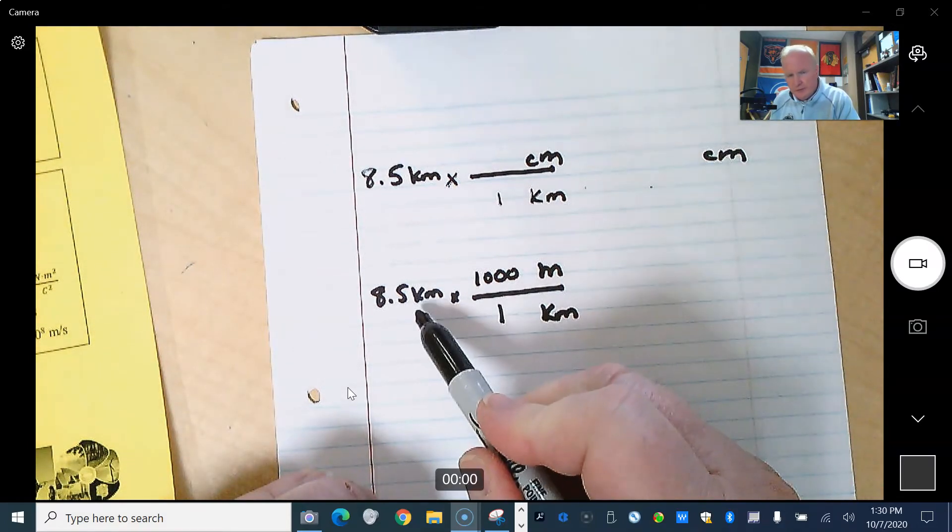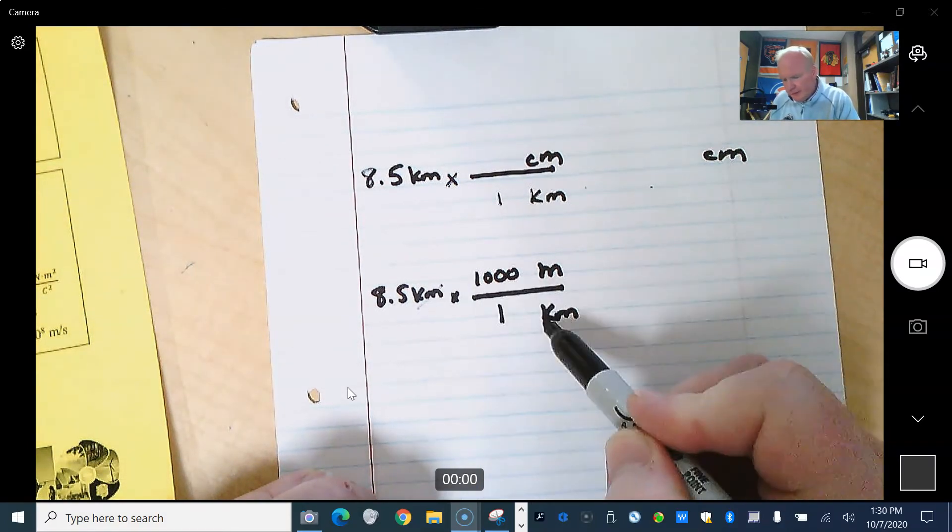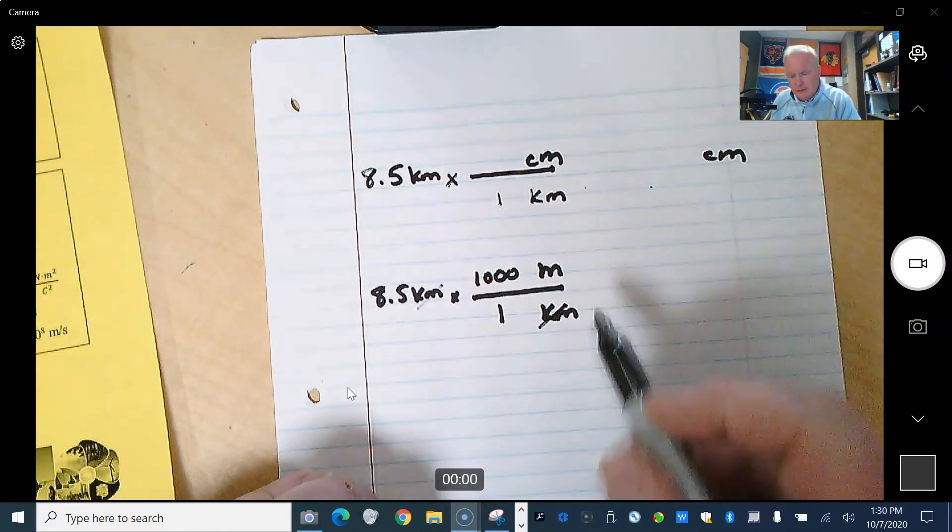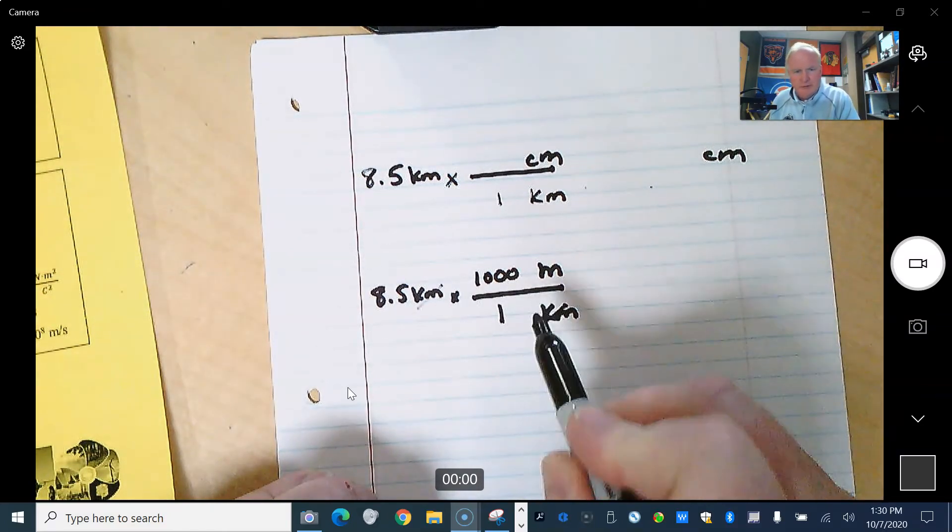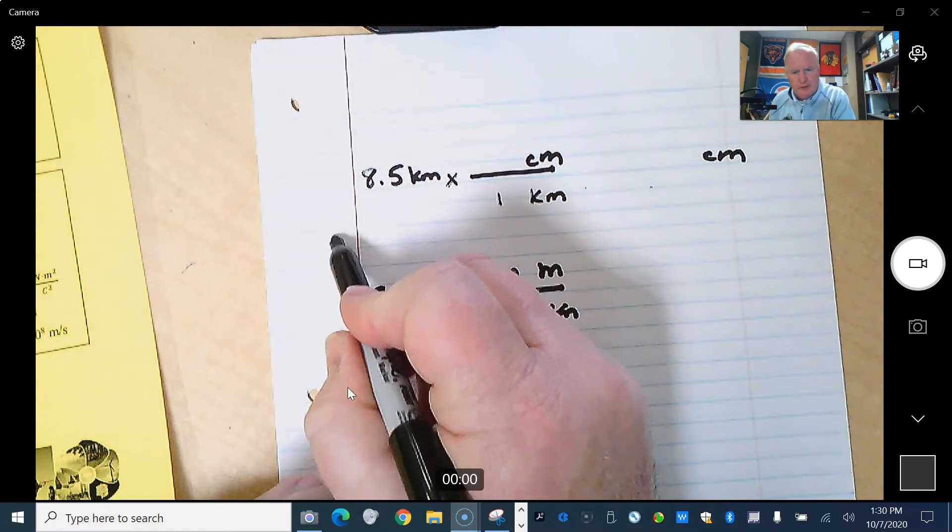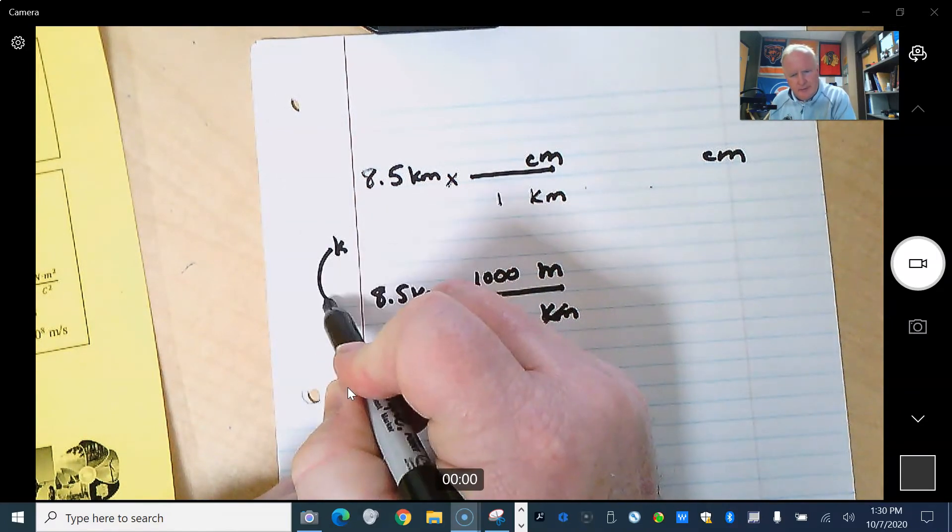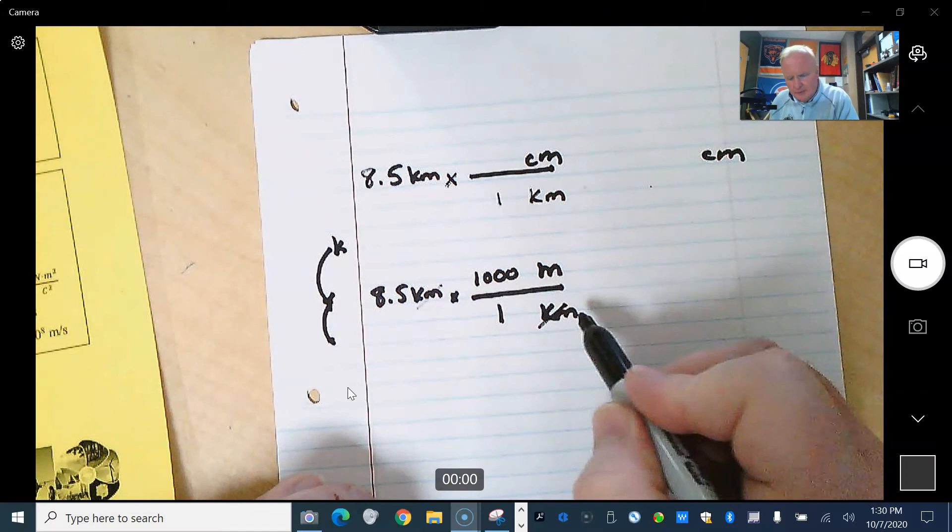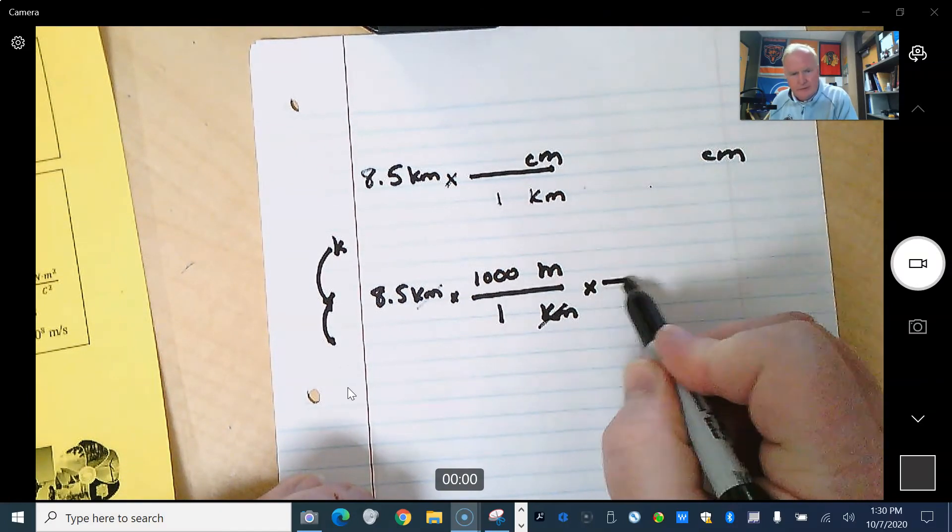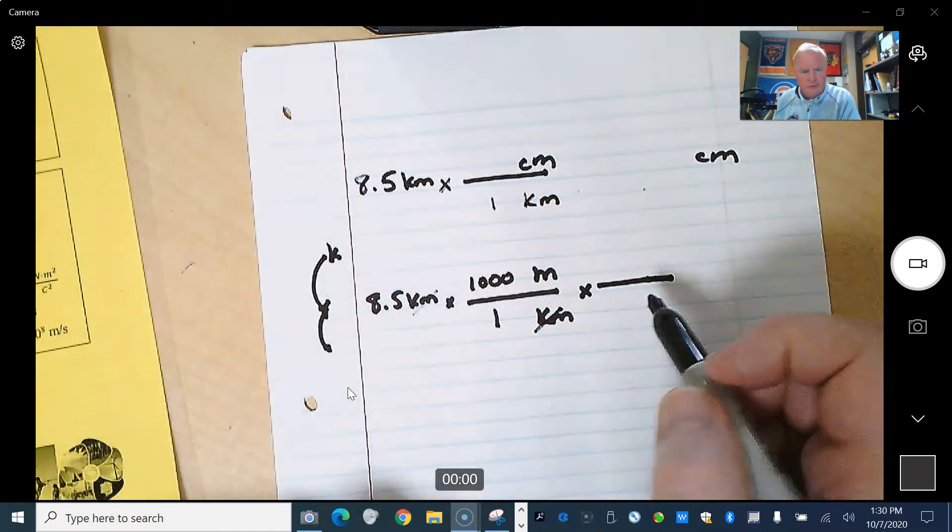Now we can always check to make sure that we're doing it correctly. Kilometers and kilometers are going to cross out. And now, as we said, we're just going to stop at the base. We're going to start at kilo. We're going to stop at the base, and then we're going to go down to centi. Well, now all we have to do is build a second conversion factor, two-step conversion.